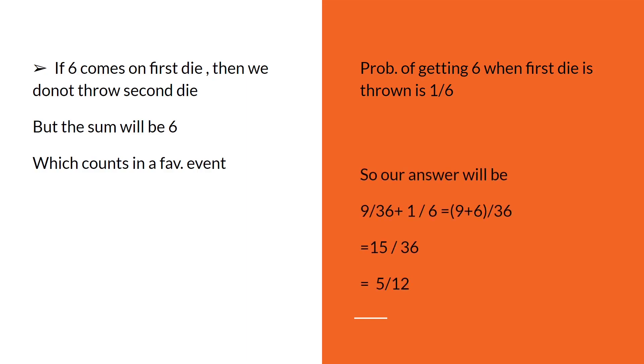So our answer will be 9 by 36 which we earlier calculated, plus 1 by 6. Where do we get 1 by 6? If 6 comes on the first die then we don't have to throw the second die, so we have to add that probability. It is additive. In this case it will be additive.